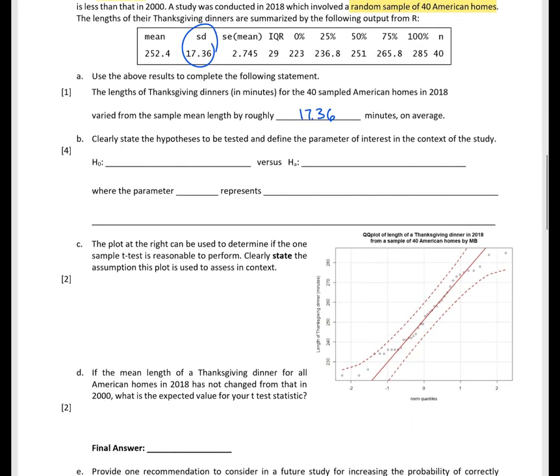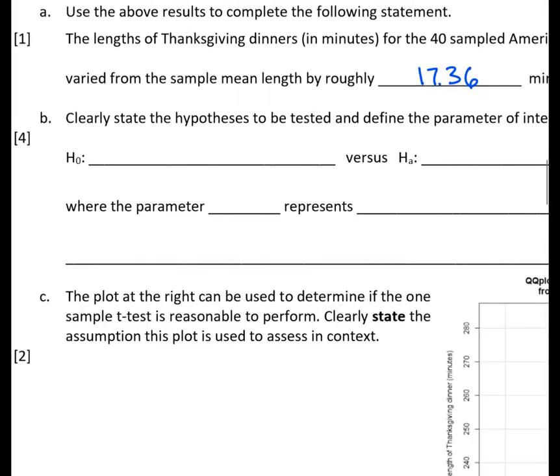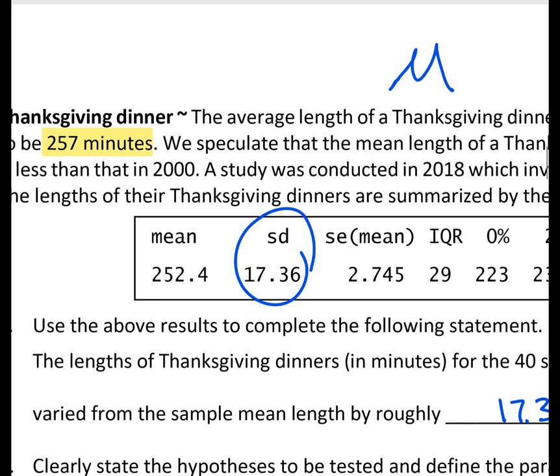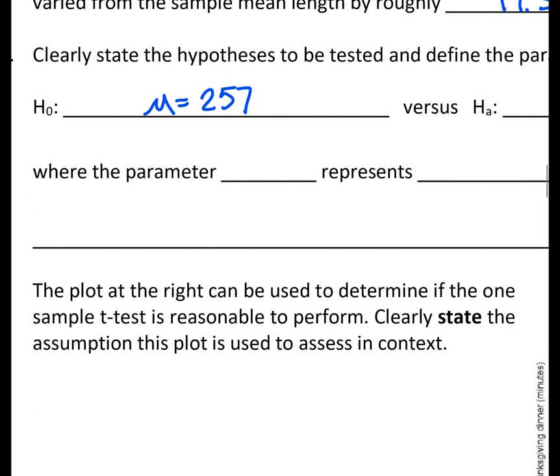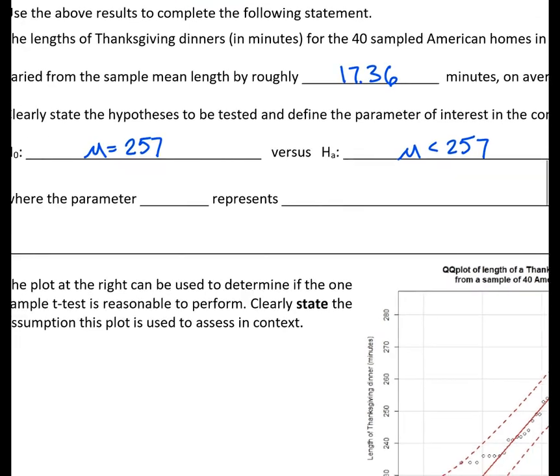Moving on to part B, clearly state the hypotheses to be tested and define the parameter of interest in the context of the study. Well, we know the mean from 2000 was 257 minutes, and we want to know if the population mean in 2018 has decreased. So for the null hypothesis, we have that μ is equal to that original 257 minutes, and we want to know if in 2018 that value has decreased at all. So we have our hypothesis set up.